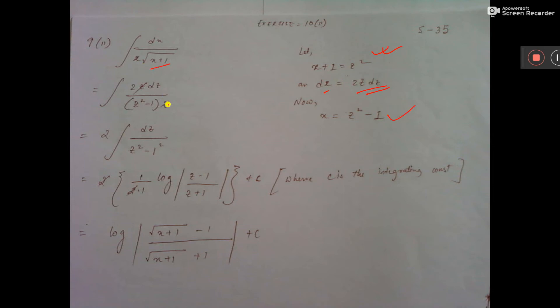So here, this is z square, root over z square means z only, and dx equal to 2z dz. The z terms cancel, and x equal to z square minus 1.